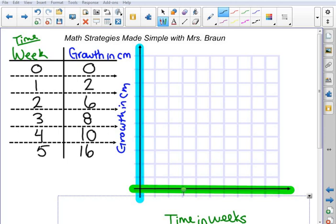Now looking at my table, I can see that my weeks increased by 1 each time, but my growth varies a little bit. My highest growth is 16 centimeters. Looking at the space on my graph, I know on the bottom I can use 1, 2, 3, 4, 5.